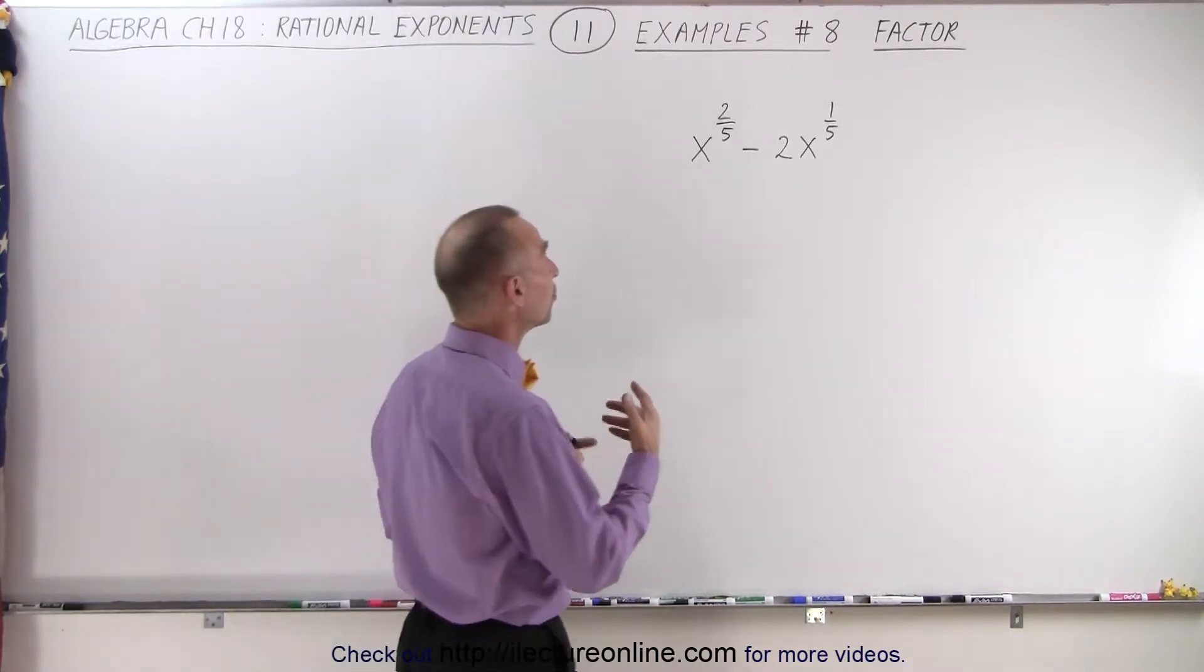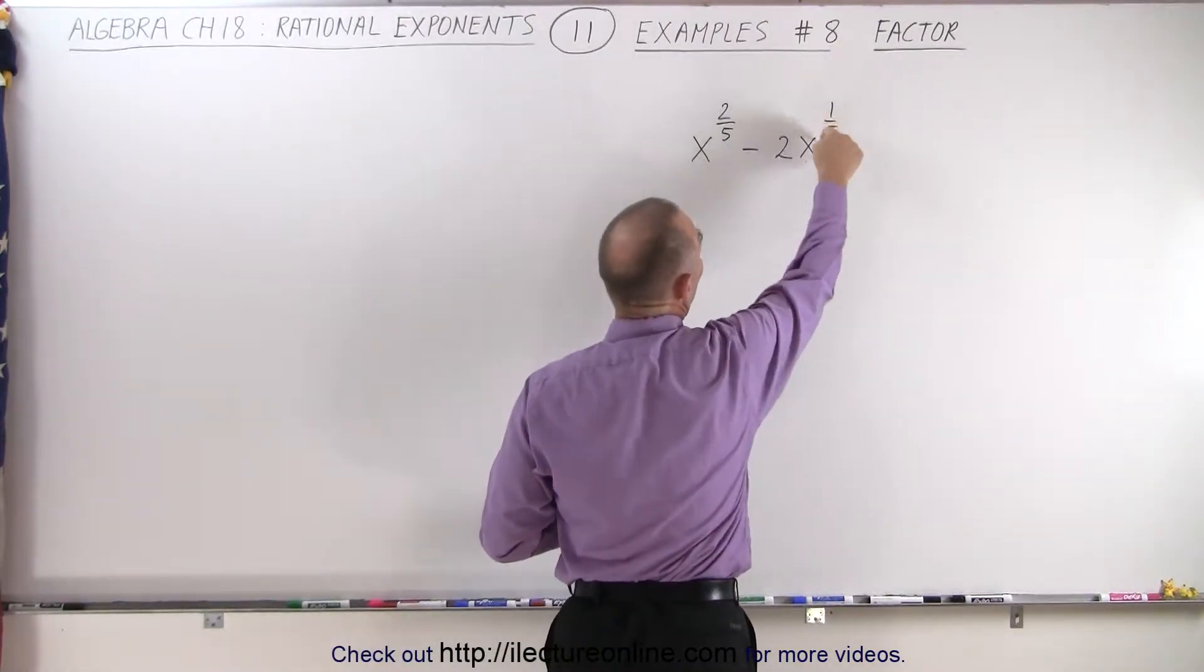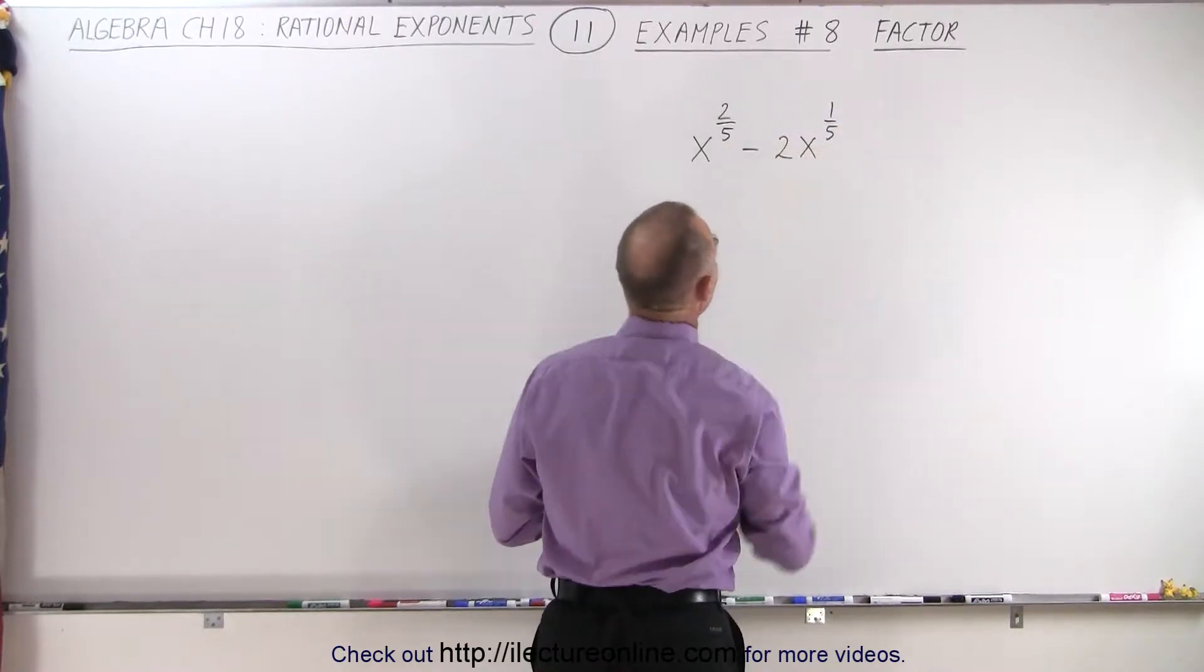Again, the trick is to look for the smallest exponent and the smallest exponent is 1 fifth. So we're going to factor out an x to 1 fifth.